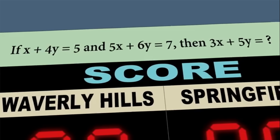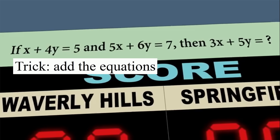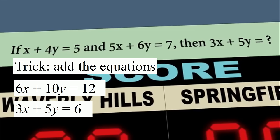Here we have another system of equations that looks like you'll need to solve for x and y to evaluate 3x plus 5y. Once again, there's a trick: add the two equations to get 6x plus 10y equals 12, then divide in half to get 3x plus 5y equals 6.